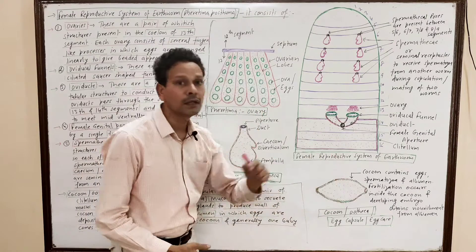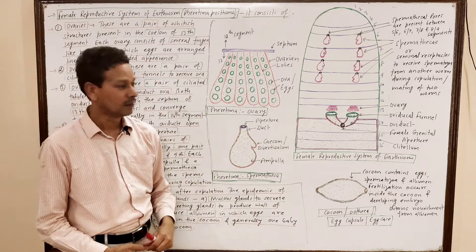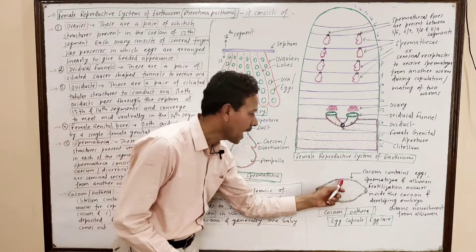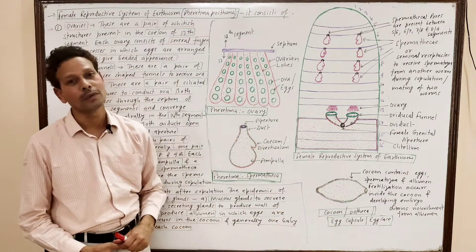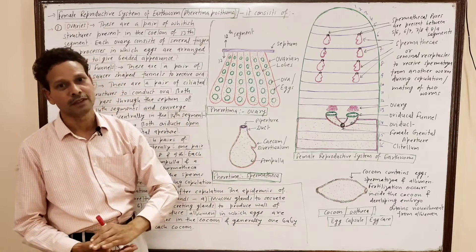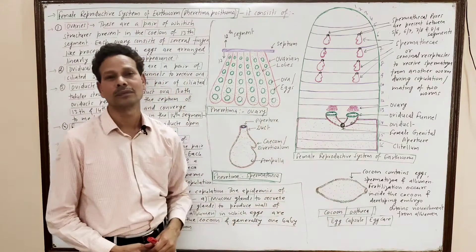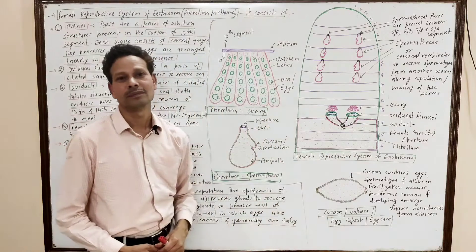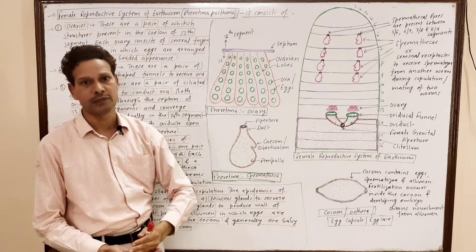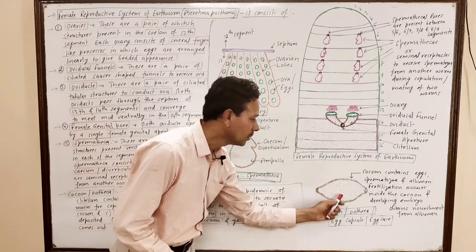Inside the cocoon, mature eggs are stored as well as spermatozoa. This means fertilization is internal, taking place inside the cocoon. Generally, one baby comes out from each cocoon. The development is direct with no larval stage, and the developing embryo obtains its nourishment from the albumin.